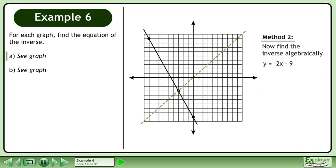Now we'll find the equation of the inverse algebraically. Swap x and y. Rearrange the equation to get the term with y on the left side. Divide both sides by 2 to get y equals negative one-half x minus nine-halves. Since the graph of the inverse is a function, we can replace y with f-inverse.